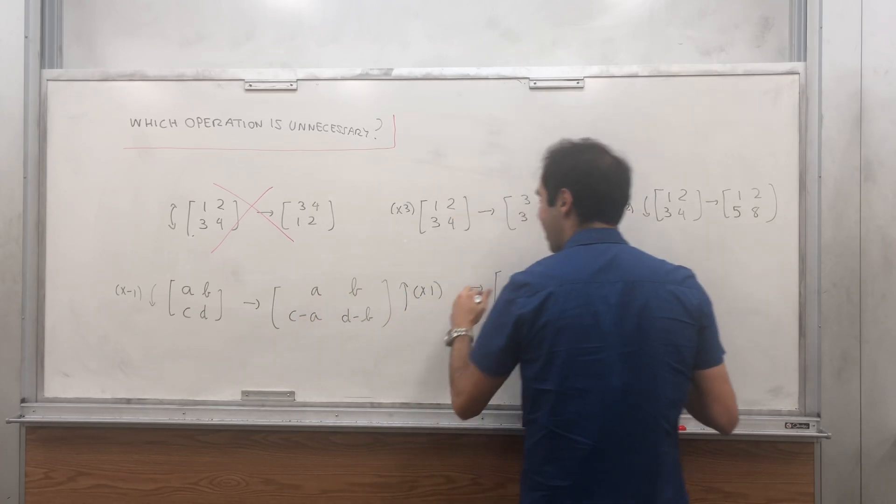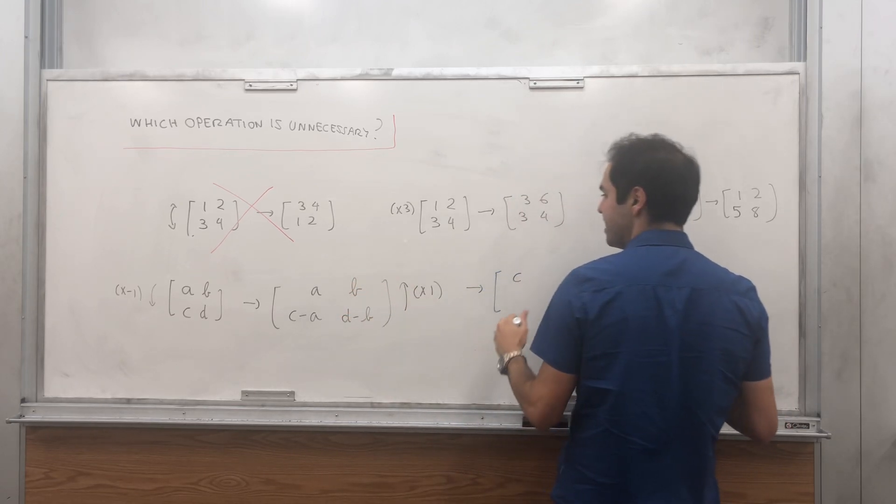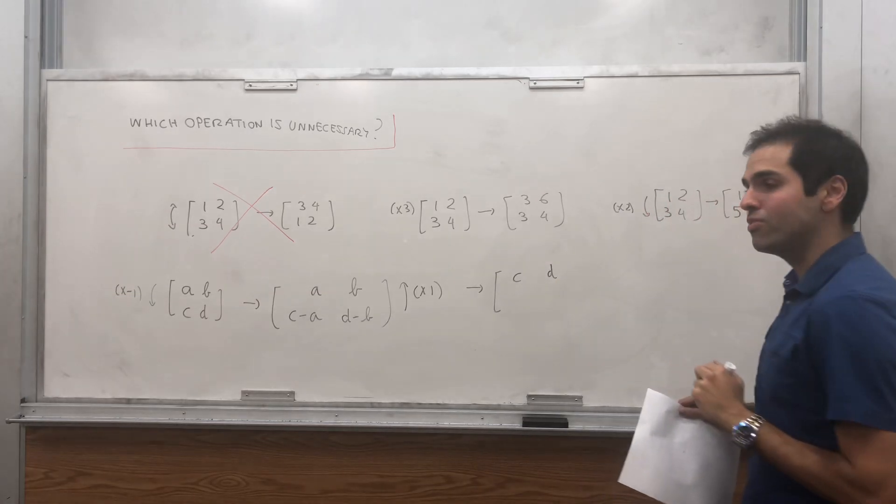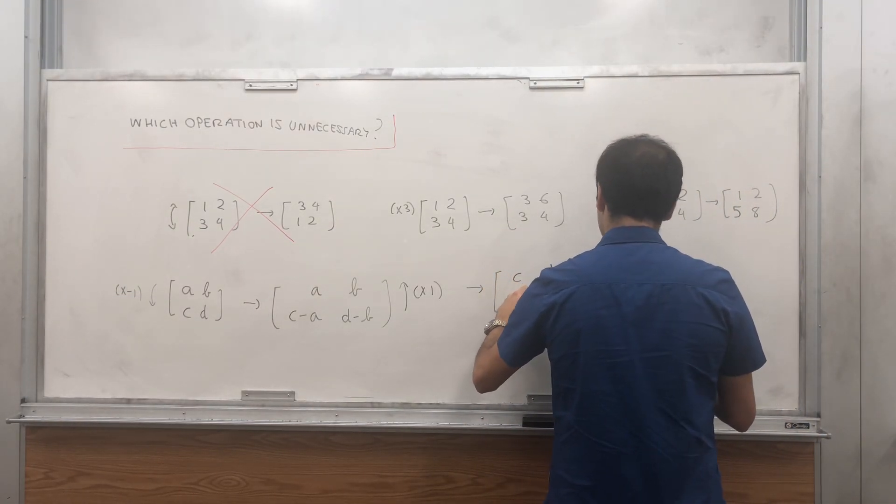Then what do we get? A plus C minus A, which is C. B plus D minus B, which is D, which is just what we want. And then we still have C minus A, D minus B.